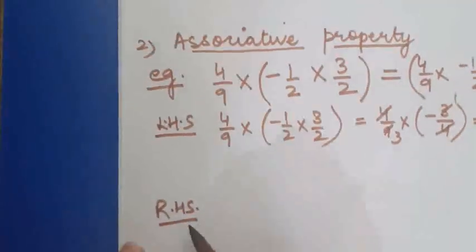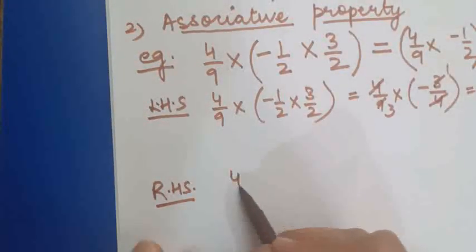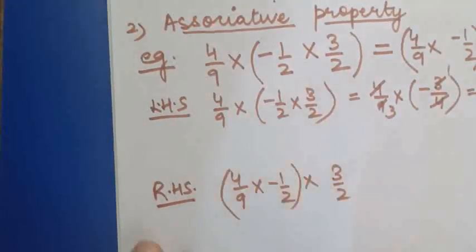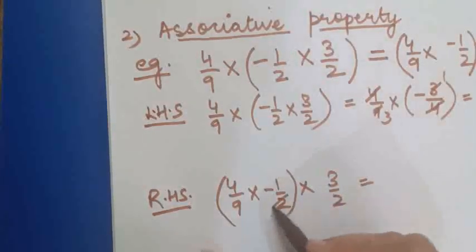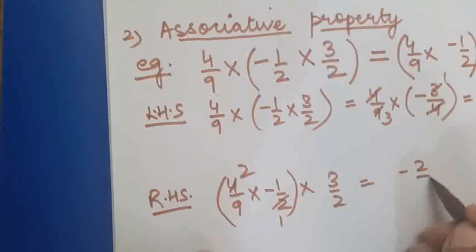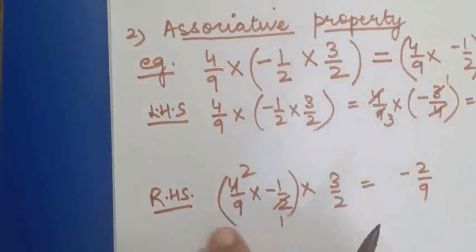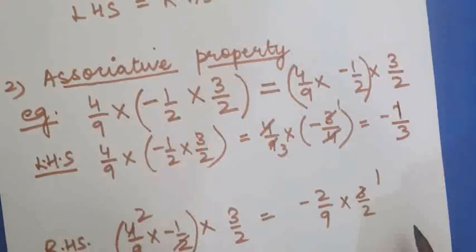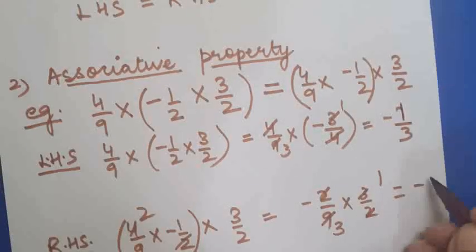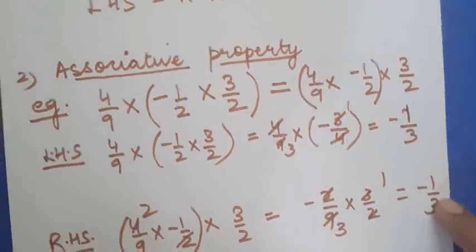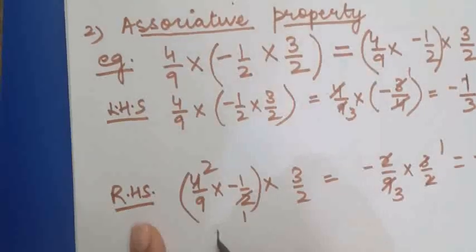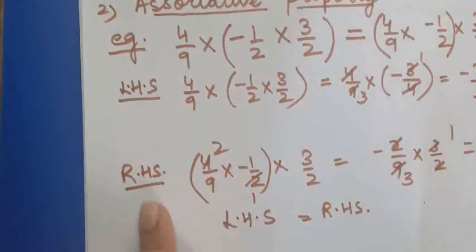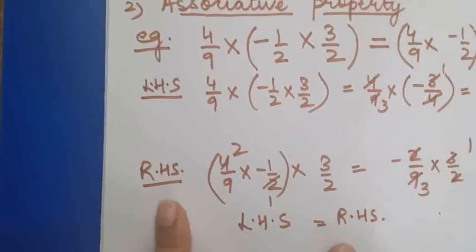Similarly, for the RHS: 4 upon 9 into minus 1 upon 2 into 3 upon 2, this time solving the first two rational numbers first. That gives minus 2 upon 9, multiplied by 3 upon 2. Cancelling, we again get minus 1 upon 3. LHS and RHS are equal, so we can say LHS equals RHS — hence verified. The associative property is also verified.